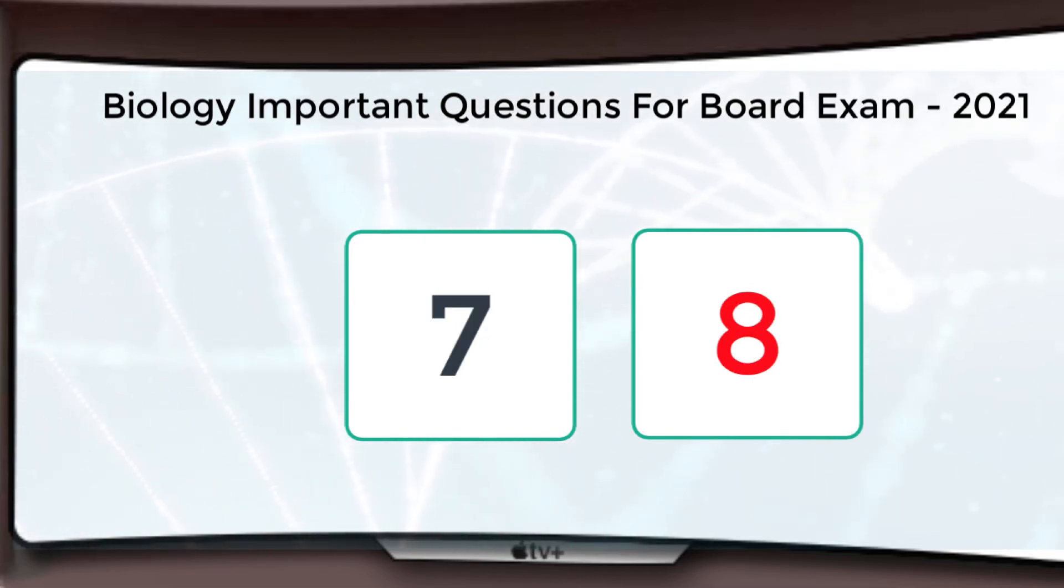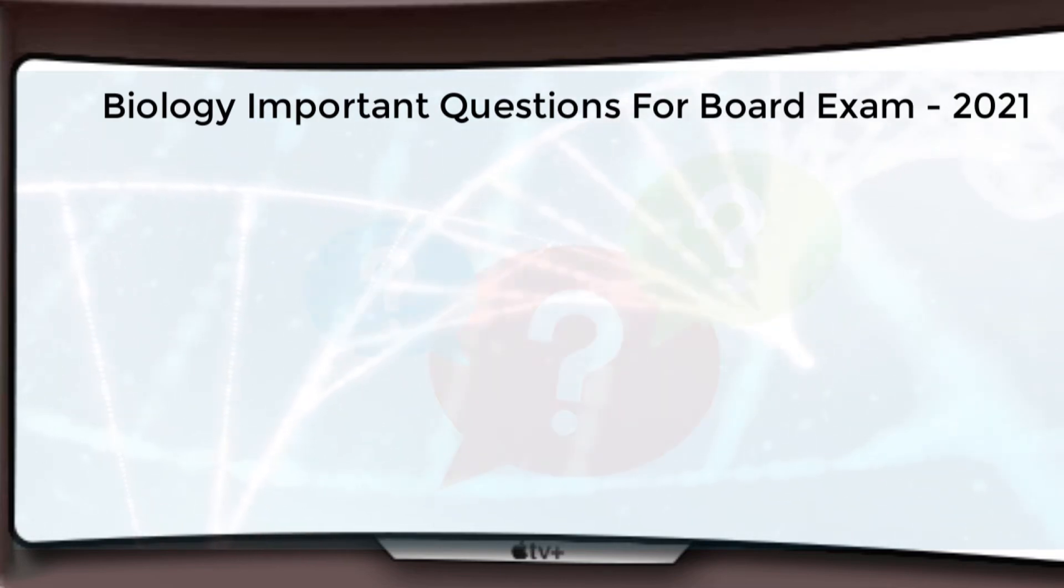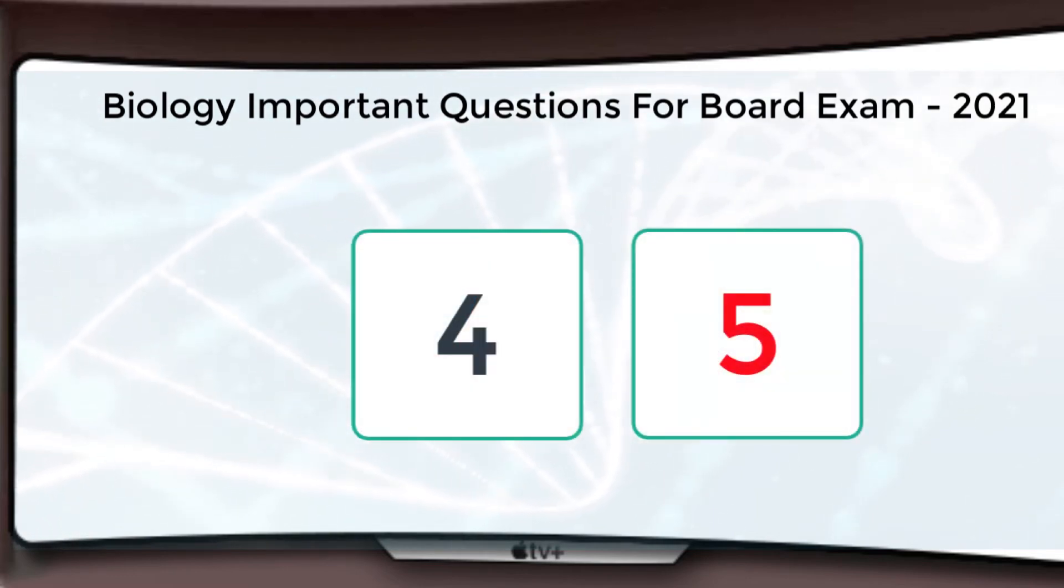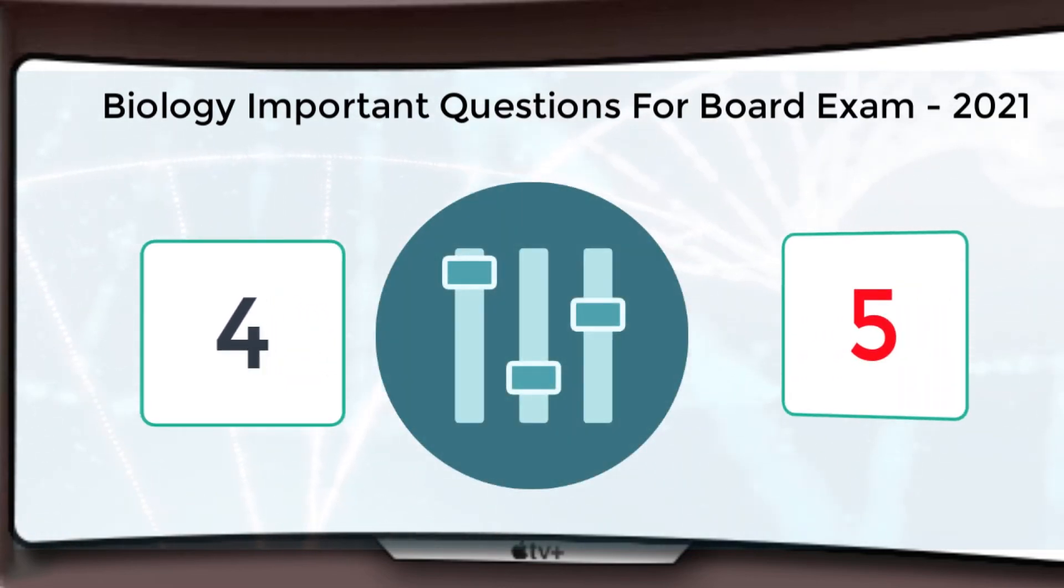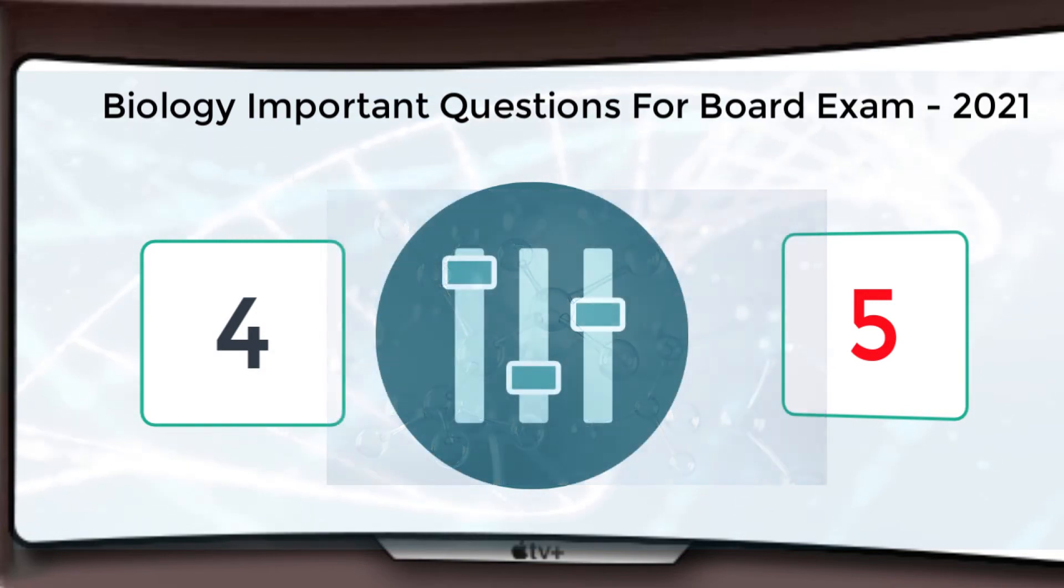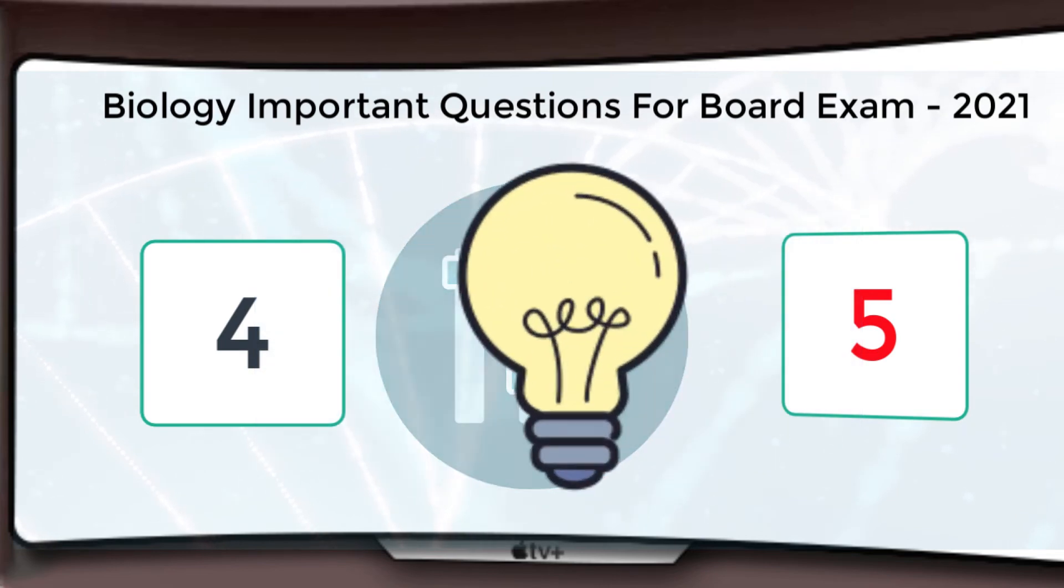But there is one thing, students. Now there is no evolution. Before that, evolution was a four to five marks chapter also—we were getting questions from it. So now this four and five marks portion will adjust. It will adjust in these types of questions. It will adjust in Molecular Basis of Inheritance, it will adjust in Principle of Inheritance and Variation.